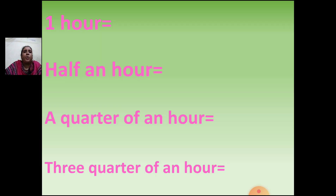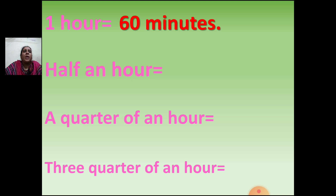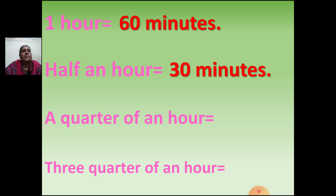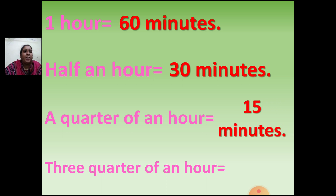In one hour there are 60 minutes. One hour equals 60 minutes. Half an hour equals how many minutes? Half of 60 is 30 minutes, so half an hour is 30 minutes. A quarter of an hour — that is half of half. Half of 30 is 15 minutes. A quarter of an hour is 15 minutes.